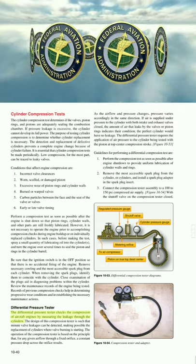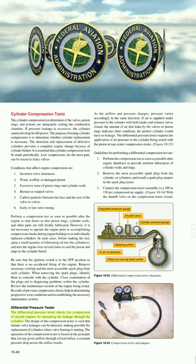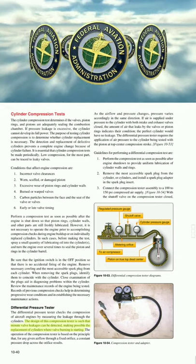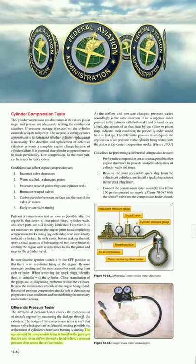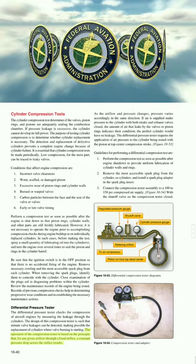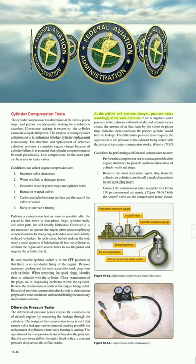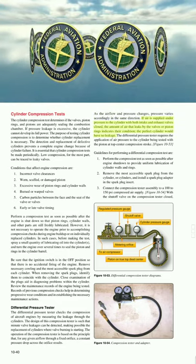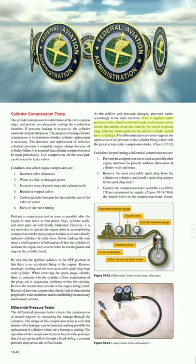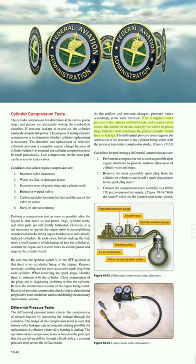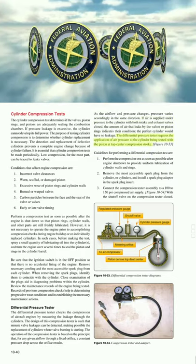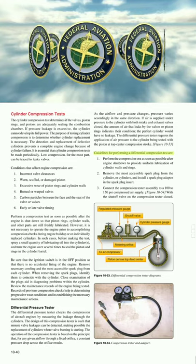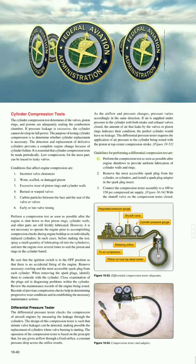The differential pressure tester operates on the principle that for any given airflow through a fixed orifice, a constant pressure drop across the orifice results. If air is supplied under pressure to the cylinder with both intake and exhaust valves closed, the amount of air that leaks by the valves or piston rings indicates their condition. A perfect cylinder would have no leakage. The tester requires application of air pressure to the cylinder being tested with the piston at top dead center on the compression stroke.